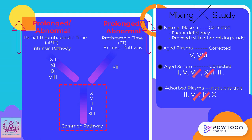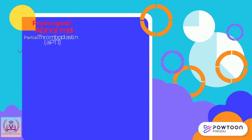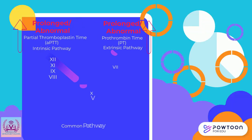Since aged plasma and aged serum corrected the tests, factors 5, 1, and 2 are not the missing factors in the patient's plasma. From the adsorbed plasma (which did not correct), the relevant common pathway factors absent are 2 and 10. Factor 2 is cancelled since it was already ruled out with aged serum. The last remaining coagulation factor is factor 10, which is the deficient factor in the patient's plasma.